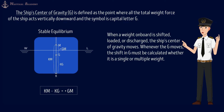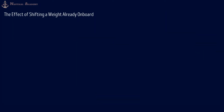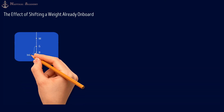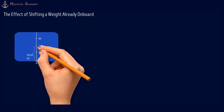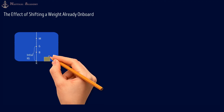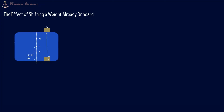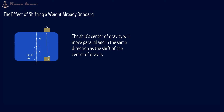But when a weight on board is shifted, loaded, or discharged, the ship's center of gravity moves. Whenever G moves, the shift in G must be calculated whether it is a single or multiple weight. Let us start with the effect of shifting a weight that is already on board. In this example, we are dealing with a single weight problem. If this is the ship's transverse section, let us assume that the ship's center of gravity or G will be here along the centerline. A weight or cargo from the lower hold will be shifted to the main deck, just above the initial position of the weight being shifted. Then the ship's center of gravity will move parallel and in the same direction as the shift of the center of gravity of the weight.